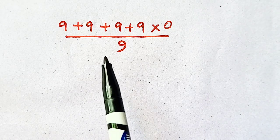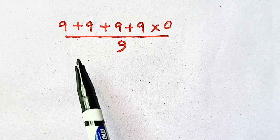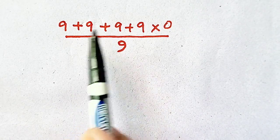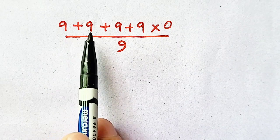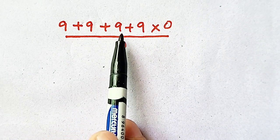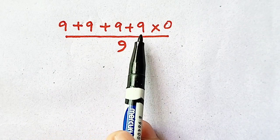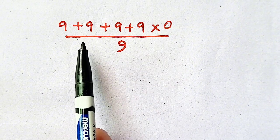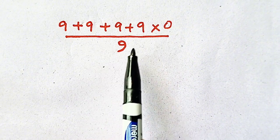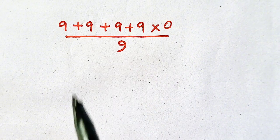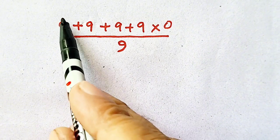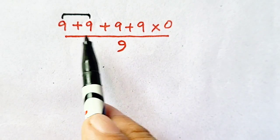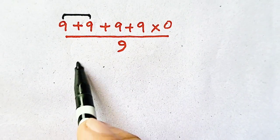Welcome to my YouTube channel. I have a new mathematical video for you: 9 plus 9 plus 9 plus 9 times 0 divided by 9. First of all, we will solve 9 plus 9 — 9 plus 9 is 18.